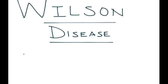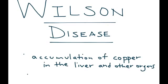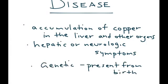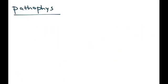Wilson disease is an accumulation of copper in the liver and other organs, and it can result in hepatic or neurologic symptoms. It is genetic, so it's present from birth, and it is autosomal recessive — that is the mode of inheritance.